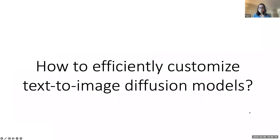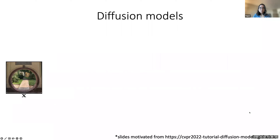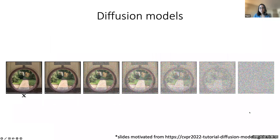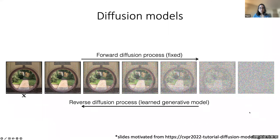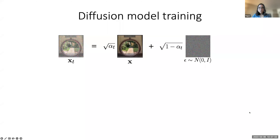I will first go briefly over the training pipeline of the diffusion model, and then discuss in more detail our fine-tuning method. The diffusion model basically consists of a forward process, where we create more noisy versions of the image as we increase the time step. This forward process is basically fixed, where we are sampling a Gaussian noise and adding that to the image. During the training process, we want to learn the reverse of this diffusion process, so that given this noisy image xt at any point in time, we can predict the less noisy version of the image, which is xt-1.